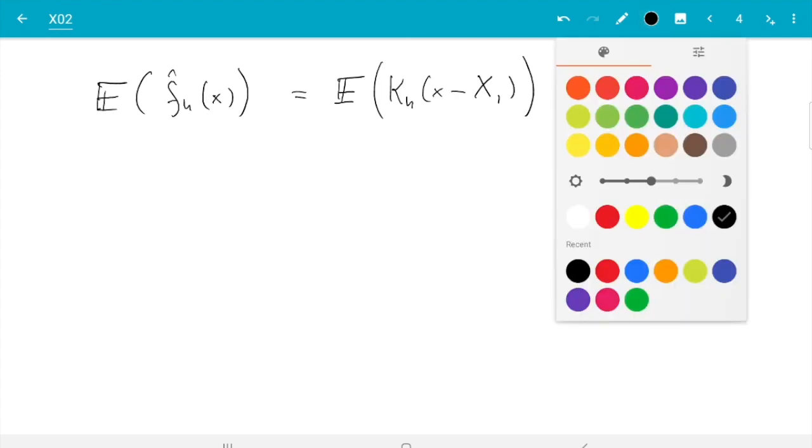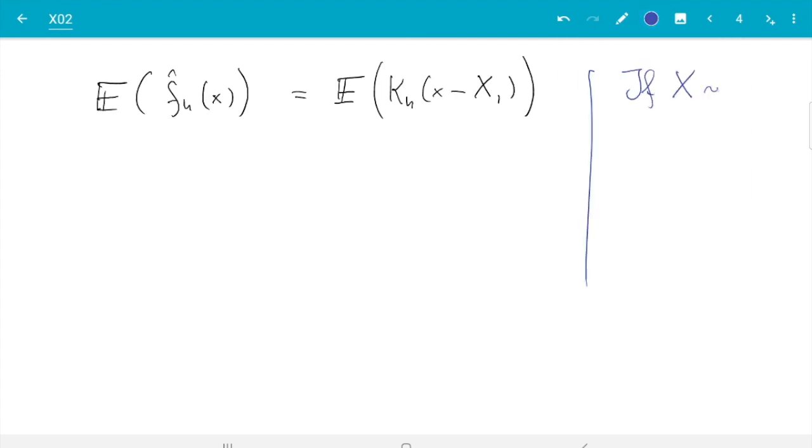So the general rule: if X has density φ and h goes from R to R, then expectation of h(X) is integral of h of little x times density φ(x) dx.